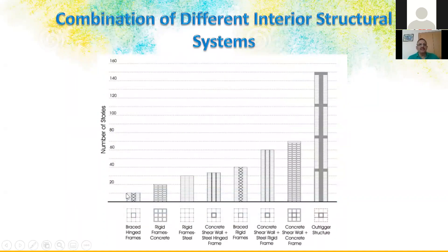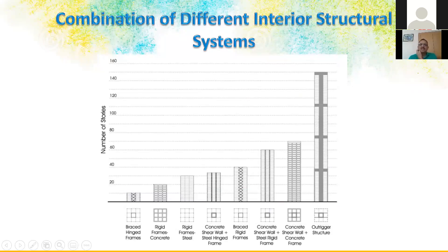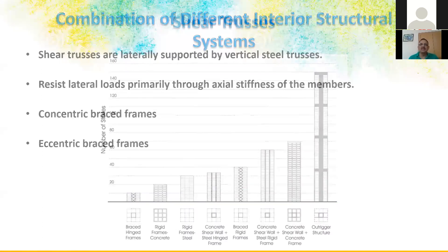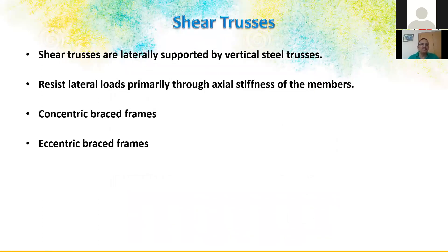Up to 15 meters we treat a building as normal. Beyond 15 meters we go for rigid frames. Beyond 30 meters we use shear core with concrete shear walls and steel hinged frames, then braced rigid frames with shear core, then concrete shear walls with steel rigid frames, then concrete shear wall plus concrete frame — treated as a tube frame. Beyond 80 meters we go for outrigger-supported systems.